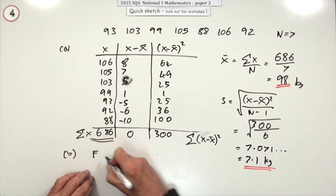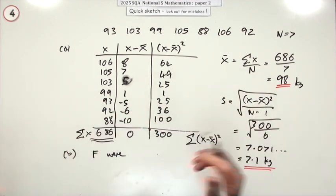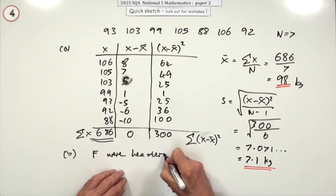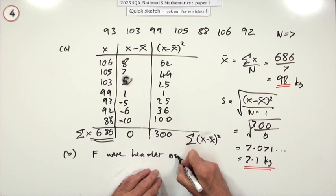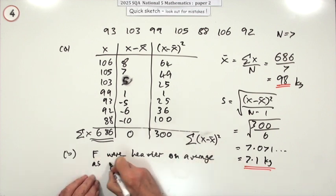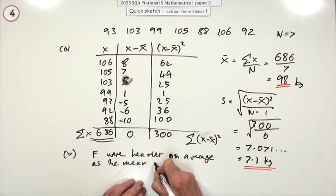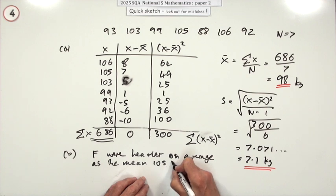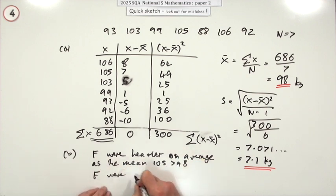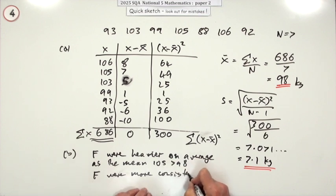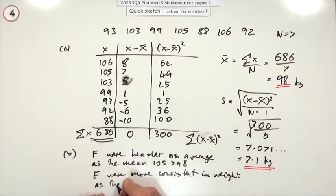So you would say that the French were, we'll expand that more for an exam, were heavier. And what told you that? The mean. On average, I should say. On average. As the mean. And there we're what again? 105. 105 is greater than 98. And also the French were more consistent. Consistent. In weight. And all closer together to each other. As the, we'll just put standard deviation in abbreviation. As the standard deviation. What was theirs again? 5.9. Is less than the 7.1. They were all kilograms of course. Right.